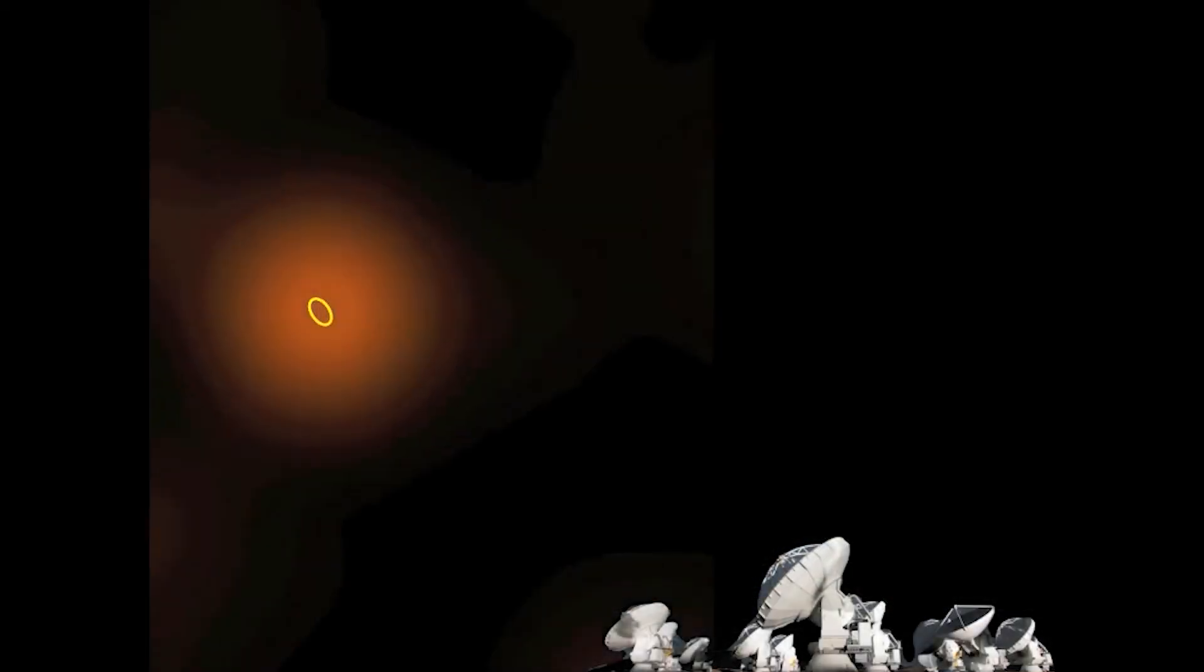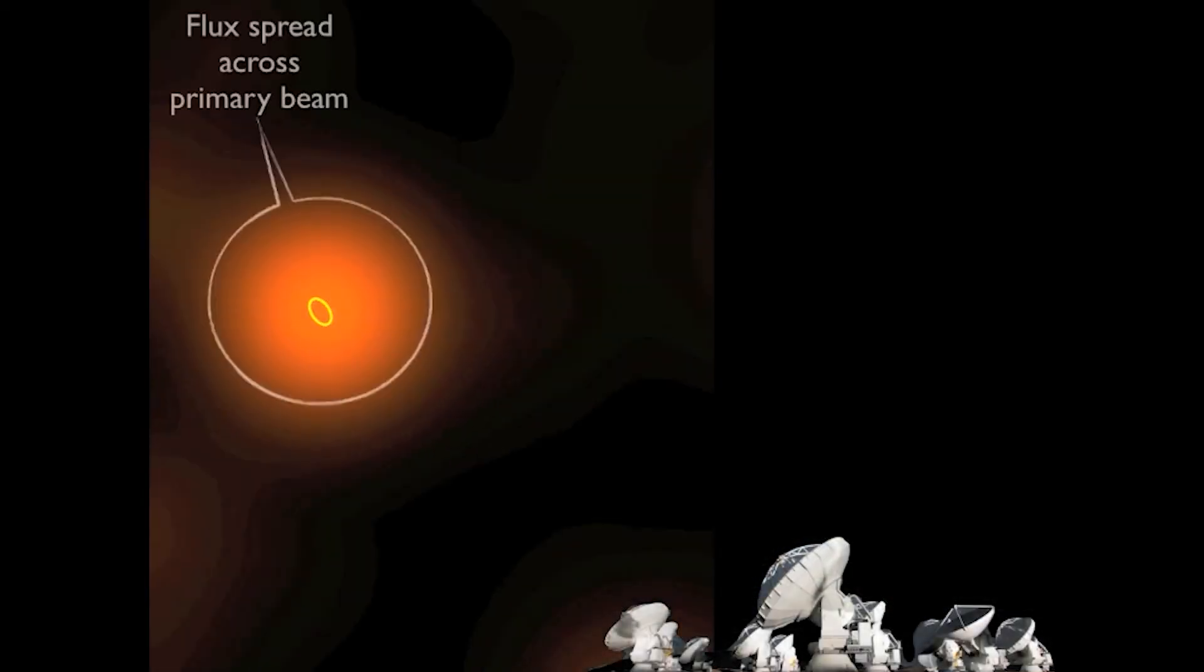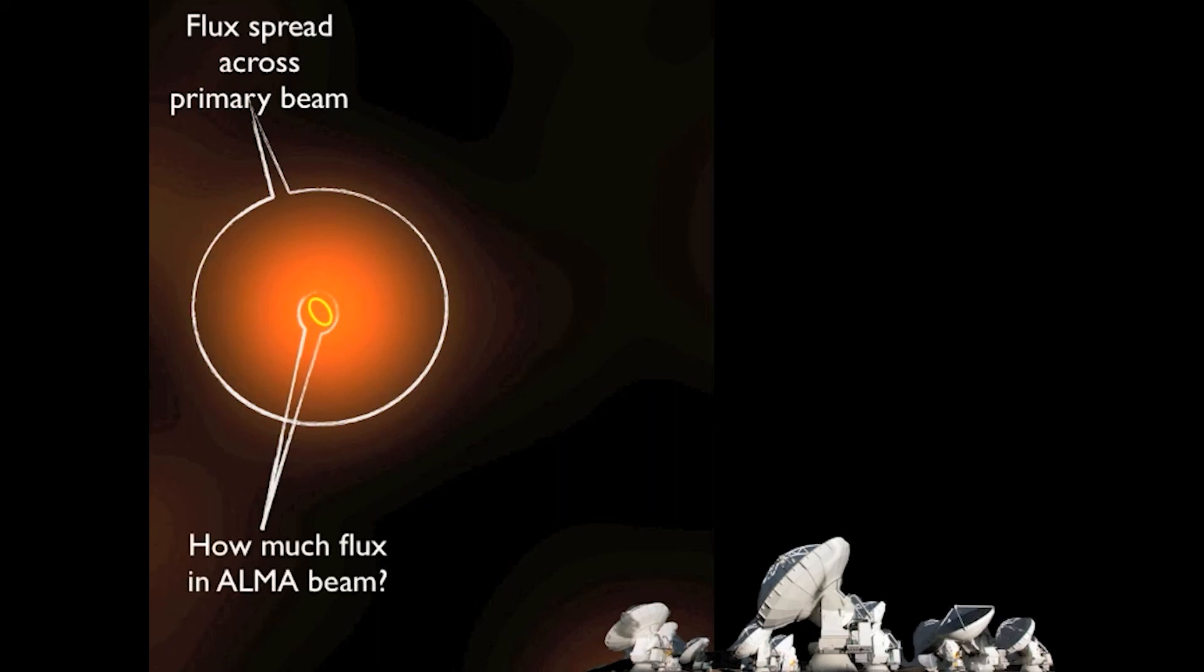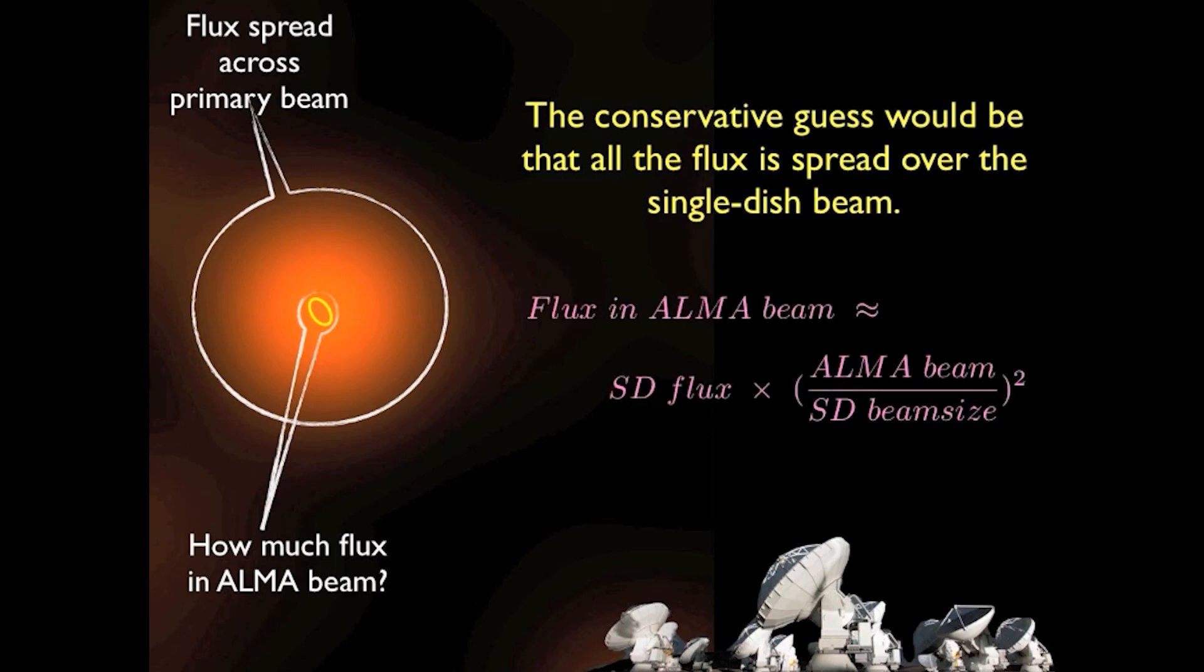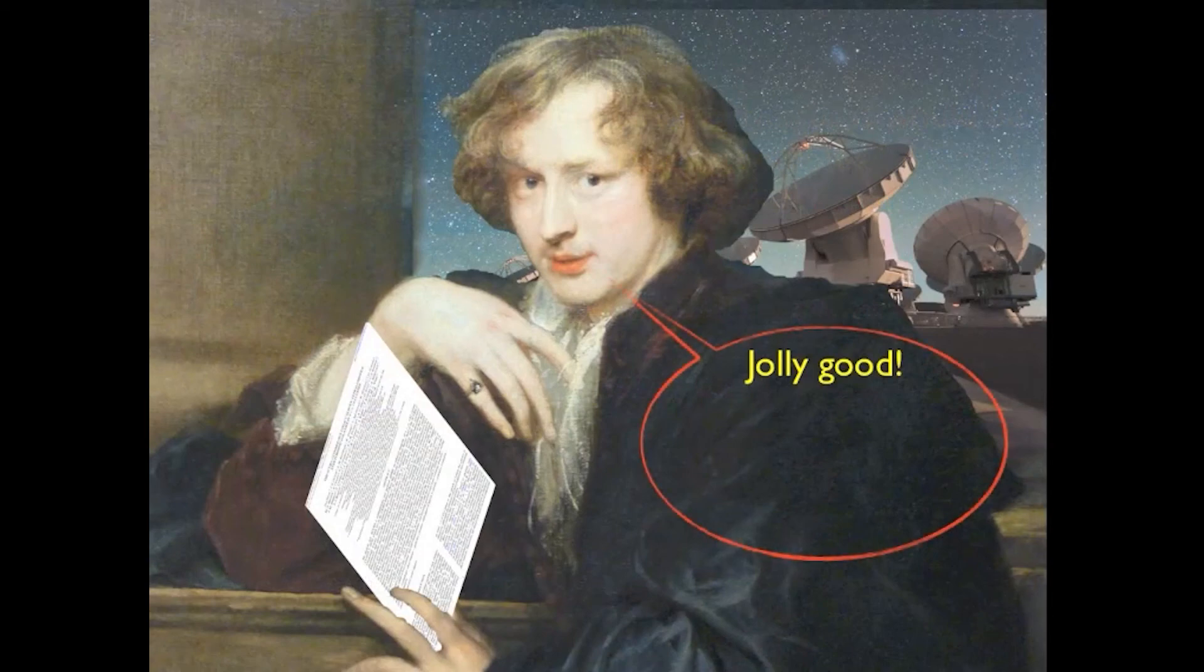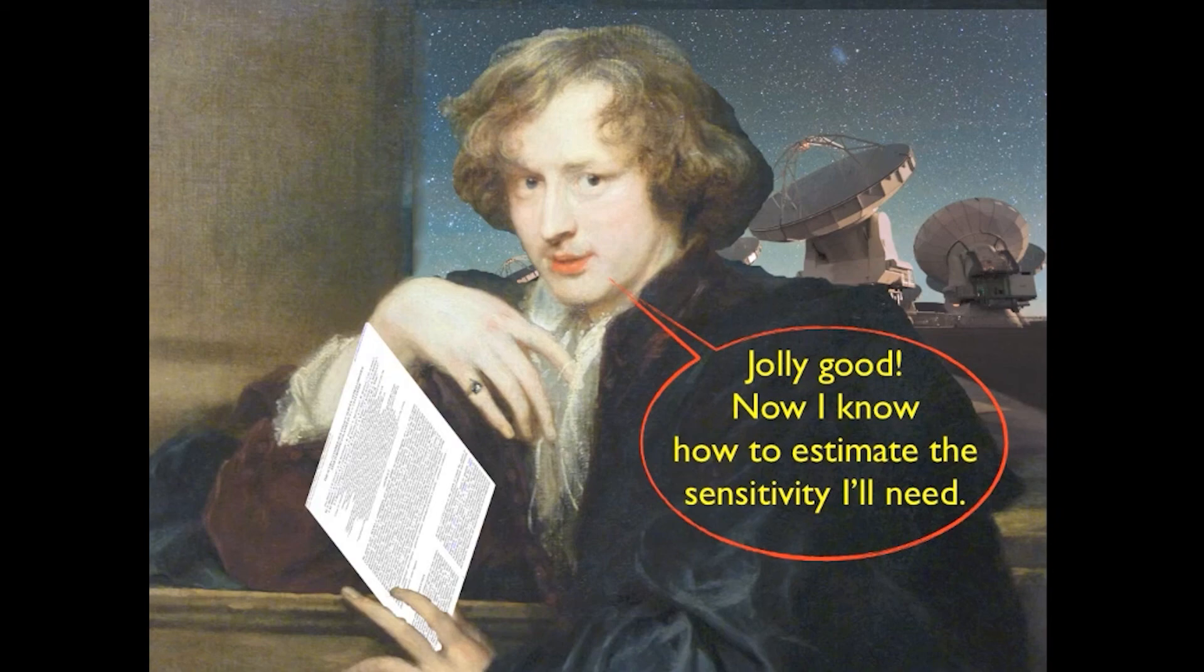In the absence of other data, or a solid physical argument that leads you to expect a particular range of angular sizes, it's probably a good idea to make the most conservative assumption that the source fills the single-dish beam. In any case, be sure to explain fully in your technical justification how you estimated the required sensitivity.